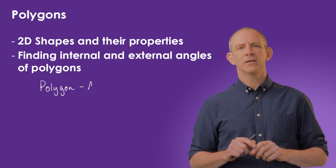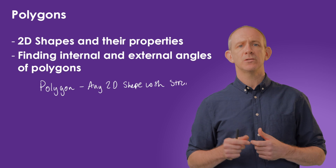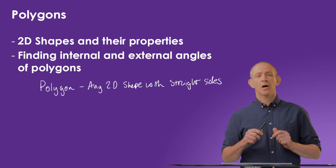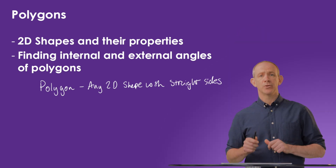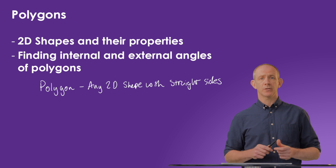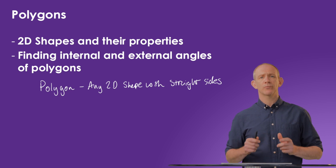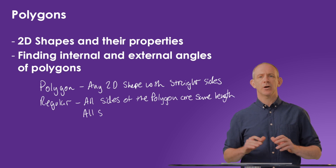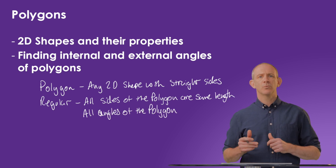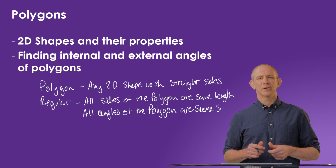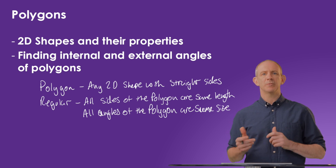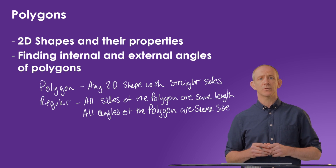A polygon is any two-dimensional shape that uses only straight lines for its sides. Another word used quite often with regards to polygons is the word regular. This means that all the sides and all the angles of a polygon are equal. This is a word to look out for, and we can use it to help us calculate many of the facts we'll be using to solve these types of questions.